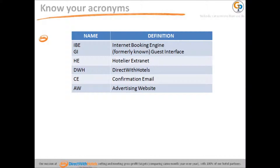HEE stands for Hotelier Extranet, which is used by our hotel partners. This product was designed so that hoteliers can embrace the tool as their own and be comfortable using it. DWH stands for Direct With Hotels — that's us. CE stands for Confirmation Email, which is the email guests and hotels receive when a reservation has been completed. Advertising Website refers to a paid advertisement we run in Google, also known as pay-per-click campaigns, and is part of the service suite we provide our hotel partners.